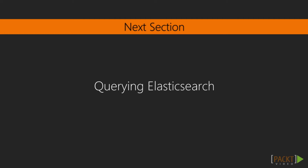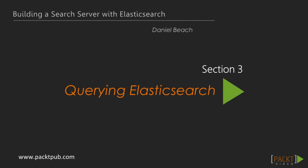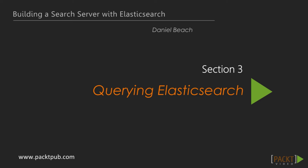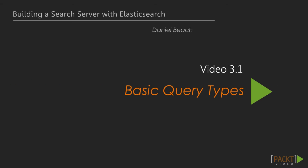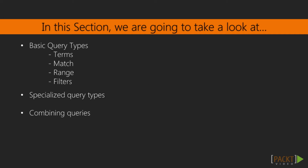That wraps up our section on Elasticsearch ingestion. Hopefully you have a better sense of how indexing works, how to override Elasticsearch's default field mappings and settings, as well as a basic understanding of some of the more advanced concepts related to ingestion. Coming up in the next section, we will cover how to use Elasticsearch's powerful query DSL. Now that we have an index containing a representative set of data, it is time to learn how to effectively query Elasticsearch. In this section, we will learn about several types of searches, including simple searches, filters, and compound queries.